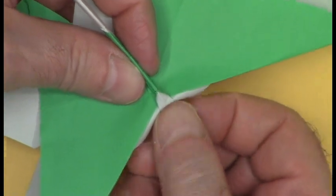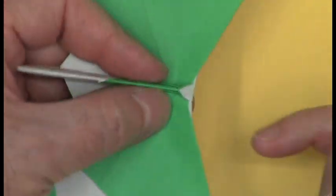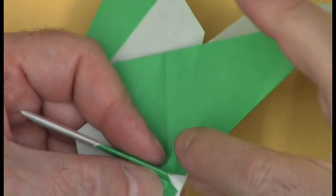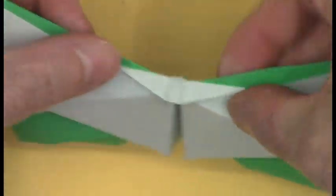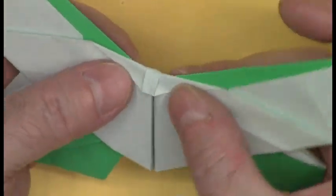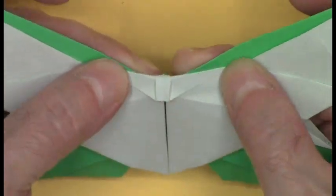Now this paper may be bent underneath and you can see the butterfly's head. Here's an underside view, the butterfly's face, and you can see the folds go across.